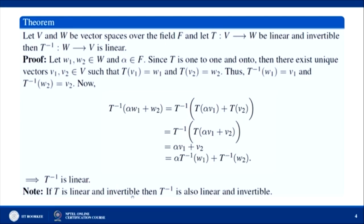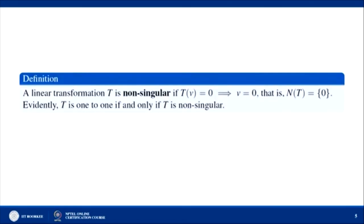If T is linear and invertible then T inverse is also linear and invertible. A linear transformation T is said to be non-singular if T(V) = 0 implies V = 0 — that means the null space of T contains only the singleton {0}, or equivalently nullity of T is 0. Evidently T is one-to-one if and only if T is non-singular.